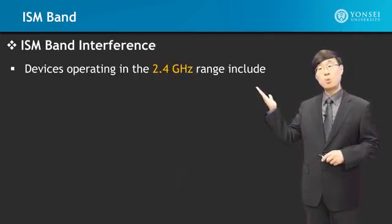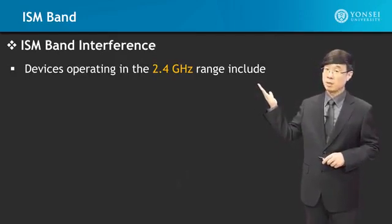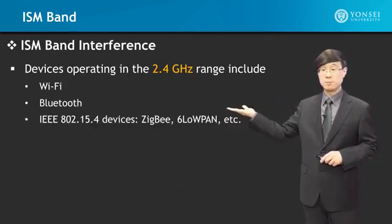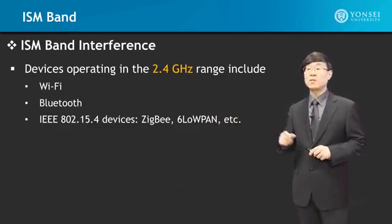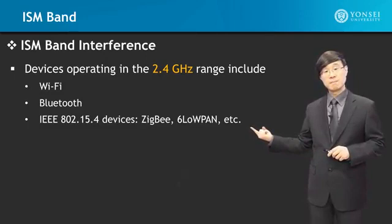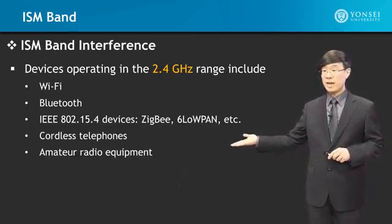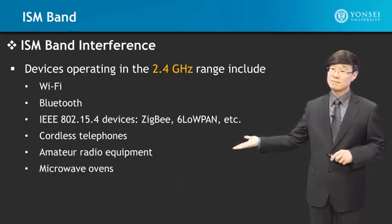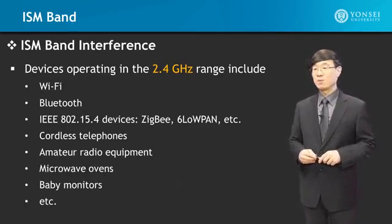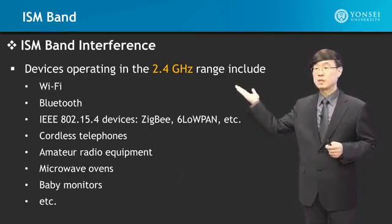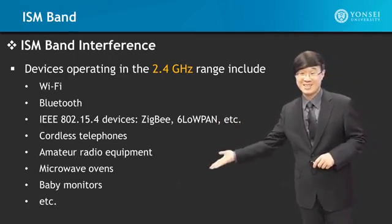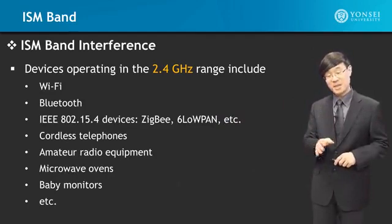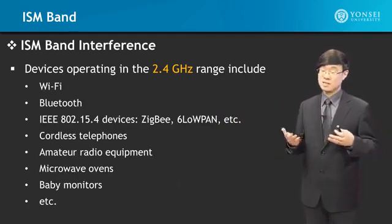Devices operating in the 2.4 GHz range — this is probably the most popular ISM band. Wi-Fi uses it, Bluetooth uses it, and also devices using the IEEE 802.15.4 modem, which includes Zigbee and 6LoWPAN. In addition, cordless phones, amateur radio equipment, microwave ovens, and baby monitors all use this. The good thing is that so many technologies use it; the bad thing is that so many devices share it, and finding a way to effectively share it is the difficulty — your advantage becomes your disadvantage.